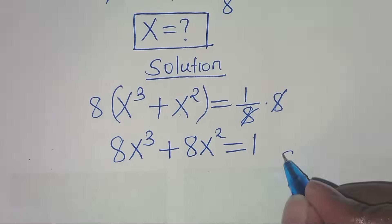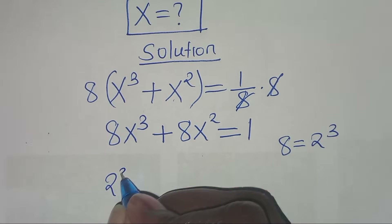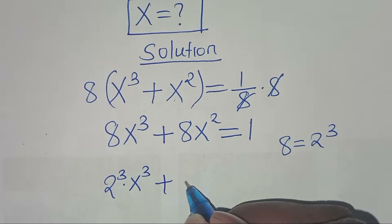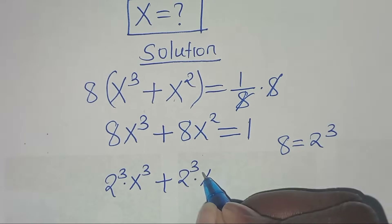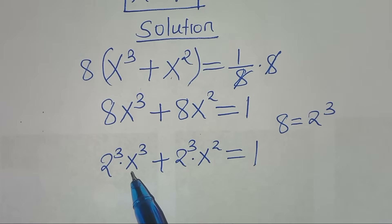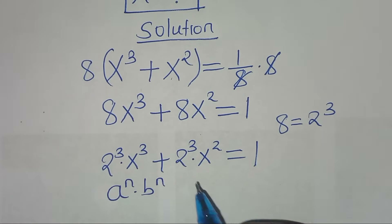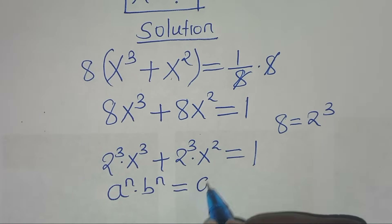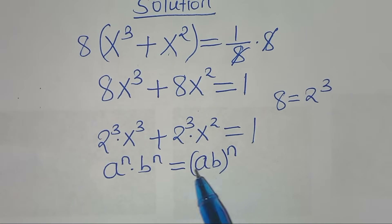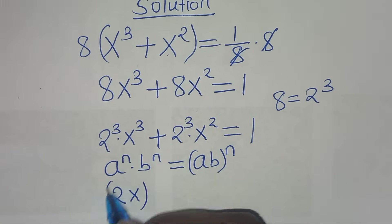We can express 8 as 2 to the power of 3. So here we have 2 to the power of 3 times x to the power of 3, plus 2 to the power of 3 times x to the power of 2, this is equal to 1. Now, 2³ · x³ is in the form a^n · b^n, which we can express as (ab)^n. Applying this exponent property, this is the same thing as (2x) raised to the power of 3.